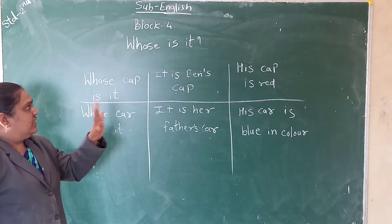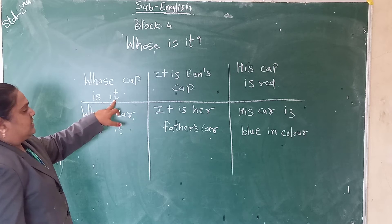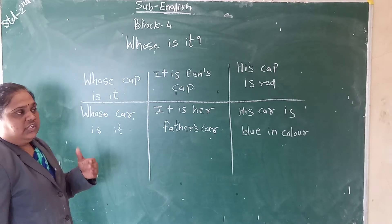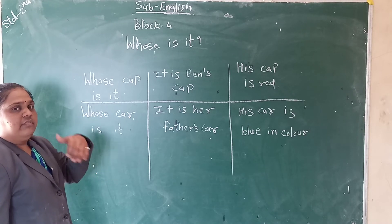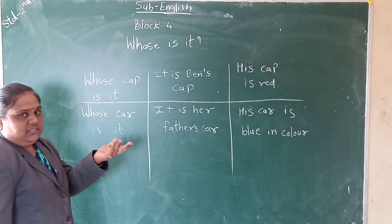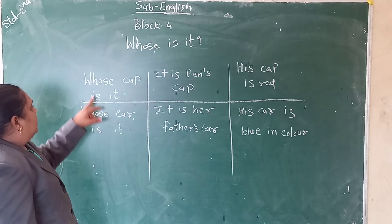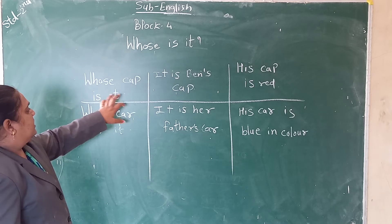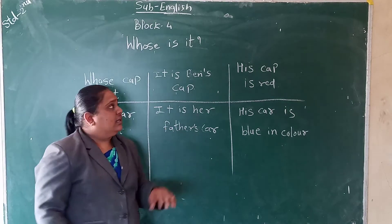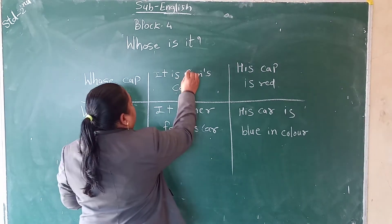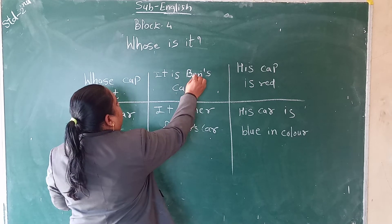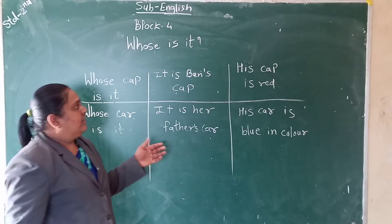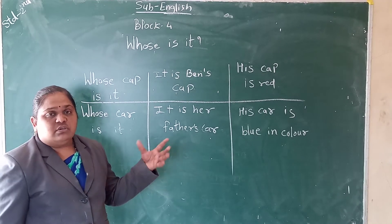We are seeing some sentences I have written here. Whose cap is it? Means, the things belonging to us will be 'our,' and if the things belong to others, it will be others. In the Ben's lesson, what we saw — what Ben and his father are doing — they wanted to celebrate the Christmas celebration. In that, we have seen some things that belong to Ben's.